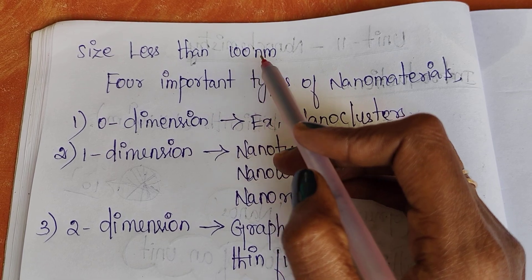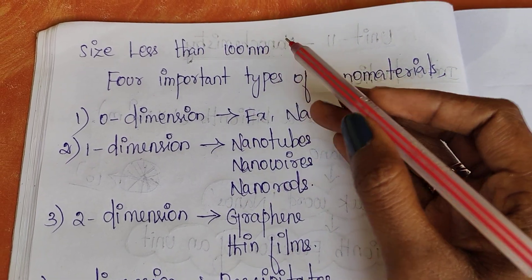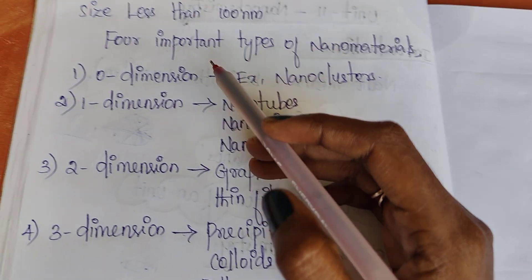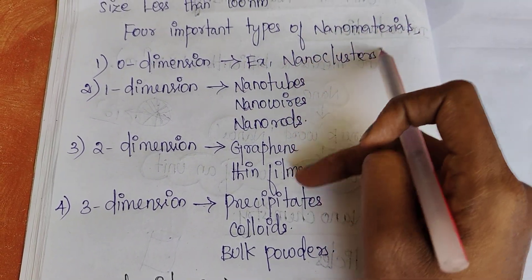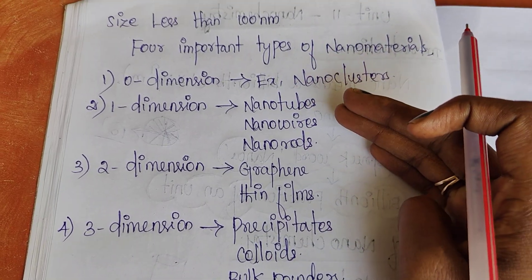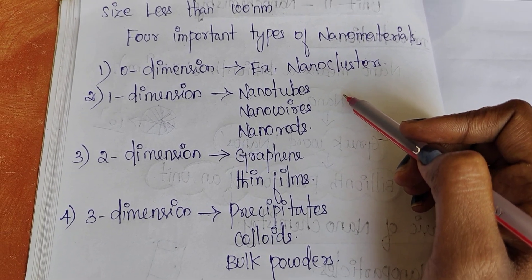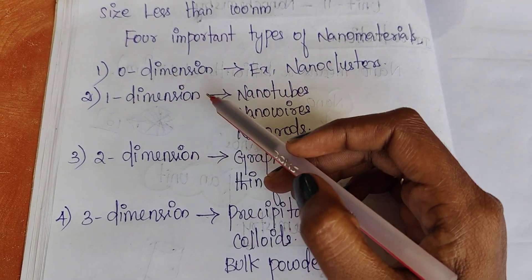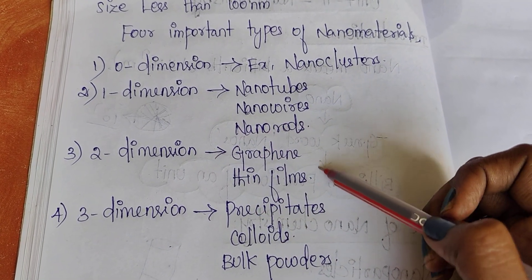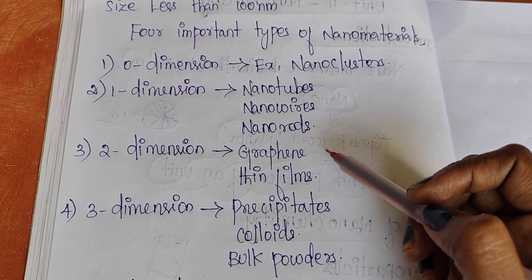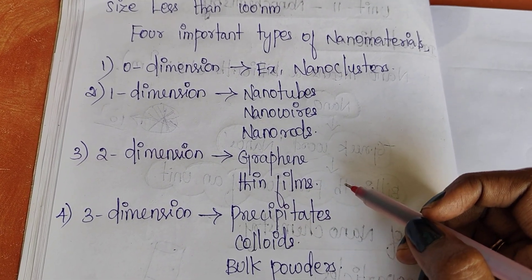The size of nanomaterials is 1 to 100 nanometers. There are four important types of nanomaterials based upon dimensions. Zero dimension: nanoclusters. One dimension: nanotubes, nanowires, nanorods. Two dimension: graphene, thin films, sheets. Three dimension: precipitates, colloids, bulk powders.